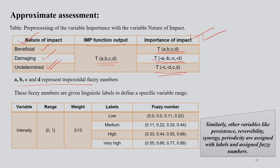These fuzzy numbers are given linguistic levels to define a specific variable range. Suppose you have a variable to measure intensity of a particular process - range 0 to 1, weight between 3 to 13, and you label it as low, medium, high, very high.